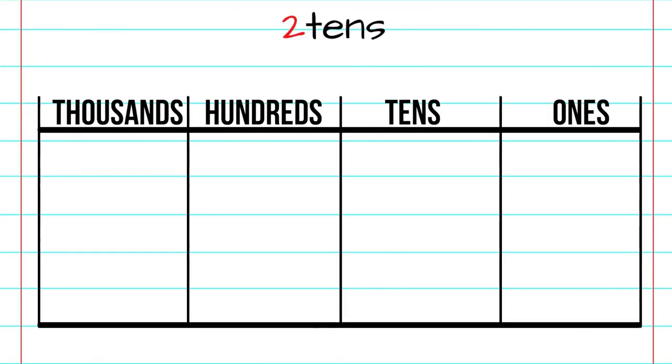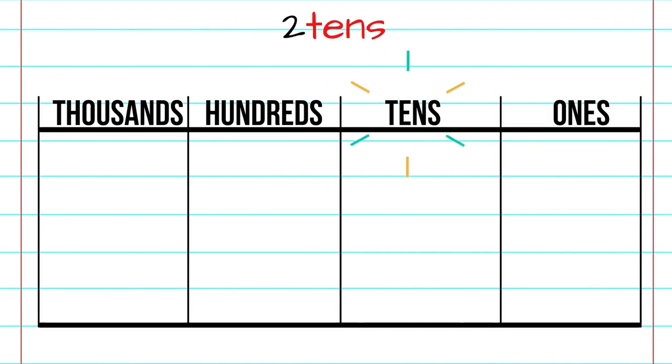So let's start representing. Here we have two tens. We're thinking to ourselves, how do we represent two tens? Tens, that's giving us a location on the chart. We see that the tens is our location. But now we're thinking, how many tens? That two has given us the amount of tens. So let's add two tens. Two tens are there. And that is how we would represent two tens.